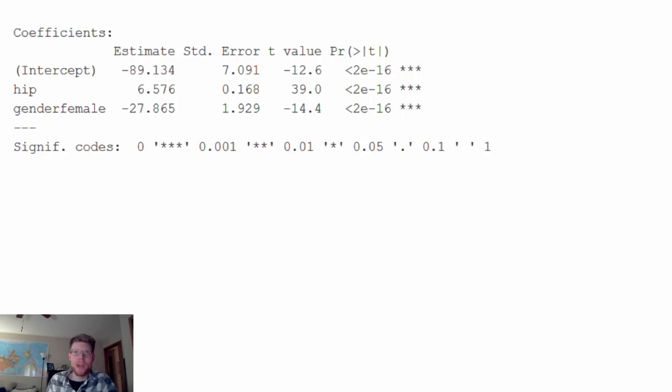If I write this model out contextually, like write the variables out here, really what I have is my prediction for weight is going to be this intercept value plus my slope for hip minus 27.865 when gender equals female. Because if gender equals male, this is a zero and the term just goes away. So I have two different best fit lines again. This is the best fit line when gender equals female, and this is when gender equals female.